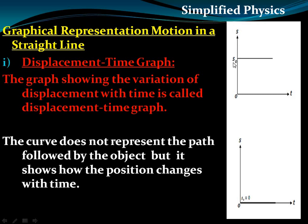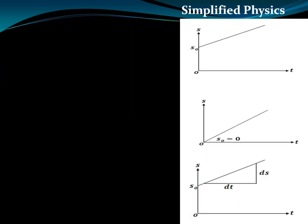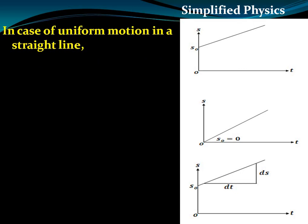If the body is at rest and at t equals zero there is a certain initial displacement, the graph will be a straight line parallel to the time axis. If the initial displacement is zero, the displacement-time graph will lie along the time axis.